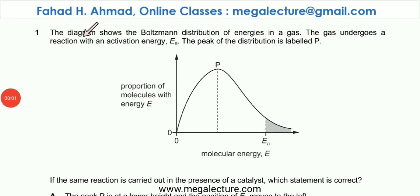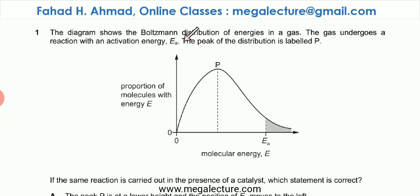The following question reads that the diagram shows a Boltzmann distribution of energies in a gas. The gas undergoes a reaction with an activation energy Ea. The peak of the distribution is labeled at P. This is your Boltzmann distribution — you have these energy levels for different particles in a container.